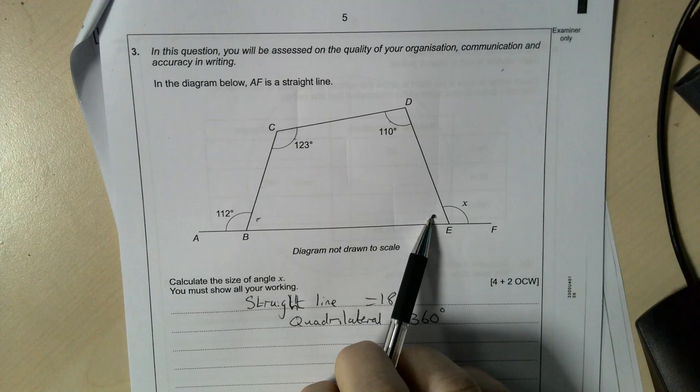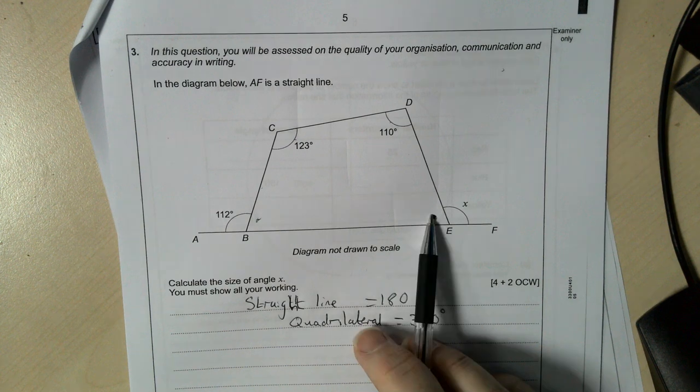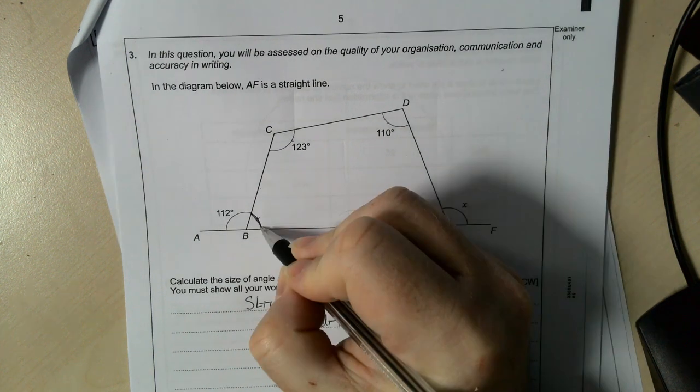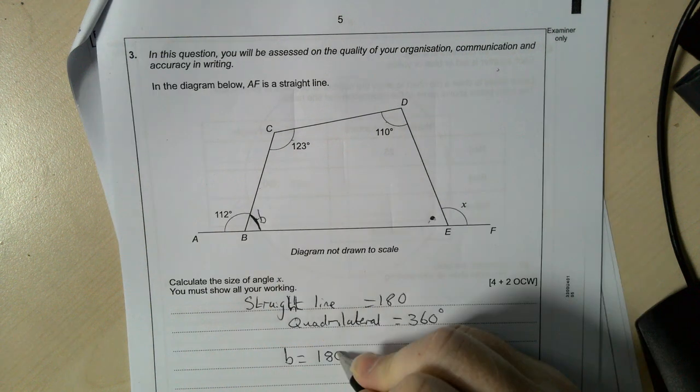I need to be able to find this angle here first because these three angles plus angle E on the inside add up to 360. So if I'm finding this first angle here, which I'll just call little b, little b is on a straight line with 112. They're next to each other.